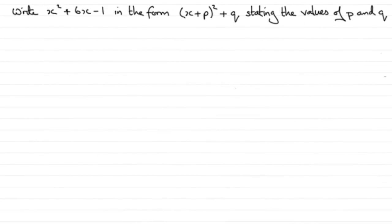Hi, welcome to this tutorial on completing the square. Now suppose you're asked to write this quadratic expression x squared plus 6x minus 1 in the form x plus p all squared plus q, stating the values of p and q. Well this particular format is often referred to as completing the square. And I'll show you how it's done.